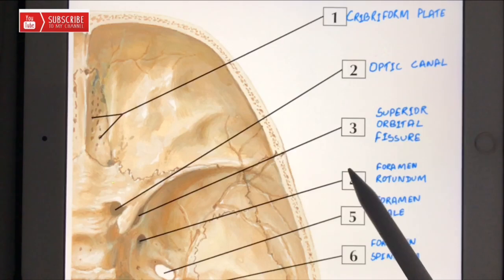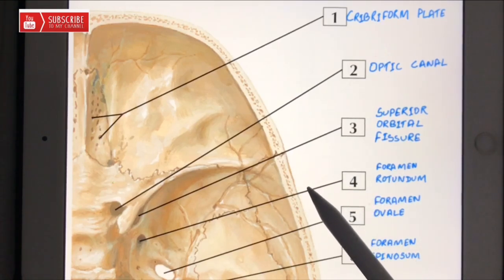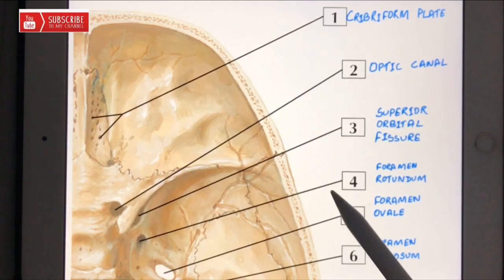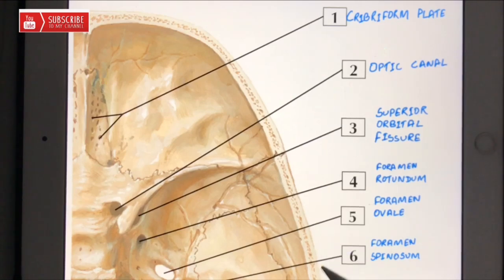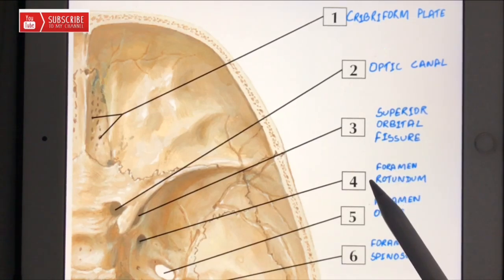Fourth cranial nerve, which is the trochlear nerve. After that, there will be lacrimal, frontal, and nasociliary branches of the ophthalmic nerve, which is the first division of the trigeminal nerve. After that, the sixth cranial nerve, that is the abducens nerve, as well as the superior ophthalmic vein also passes through the superior orbital fissure.